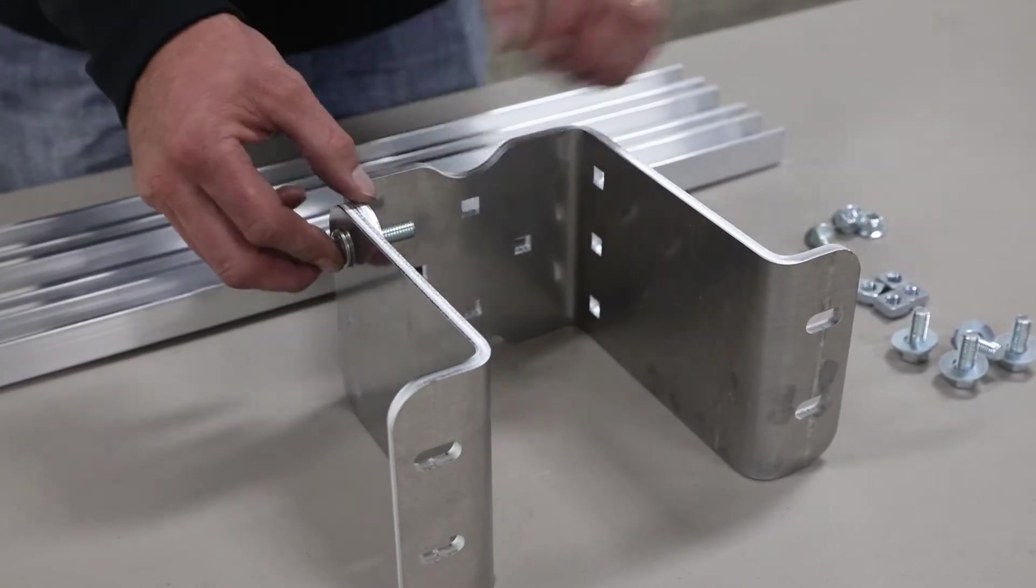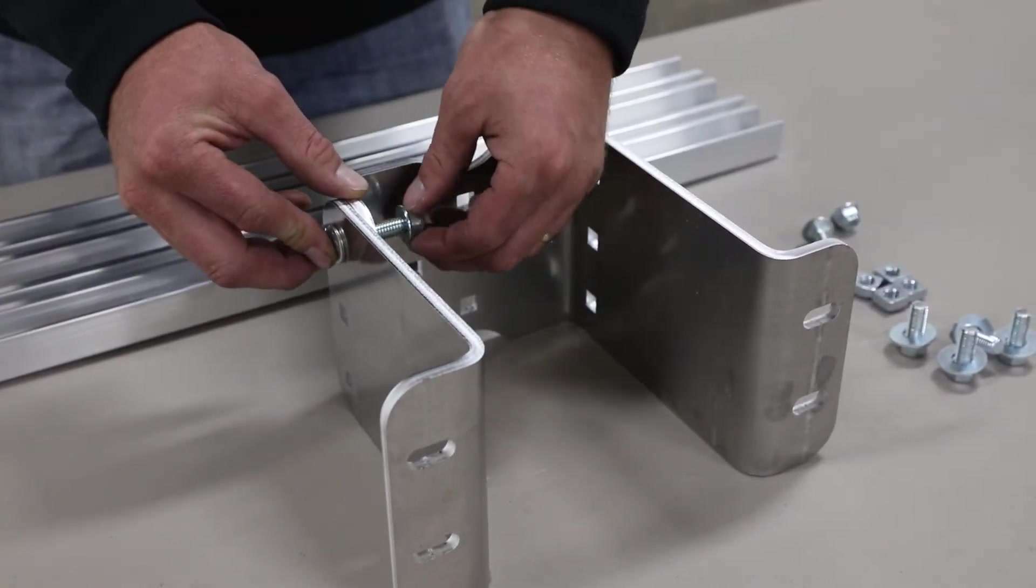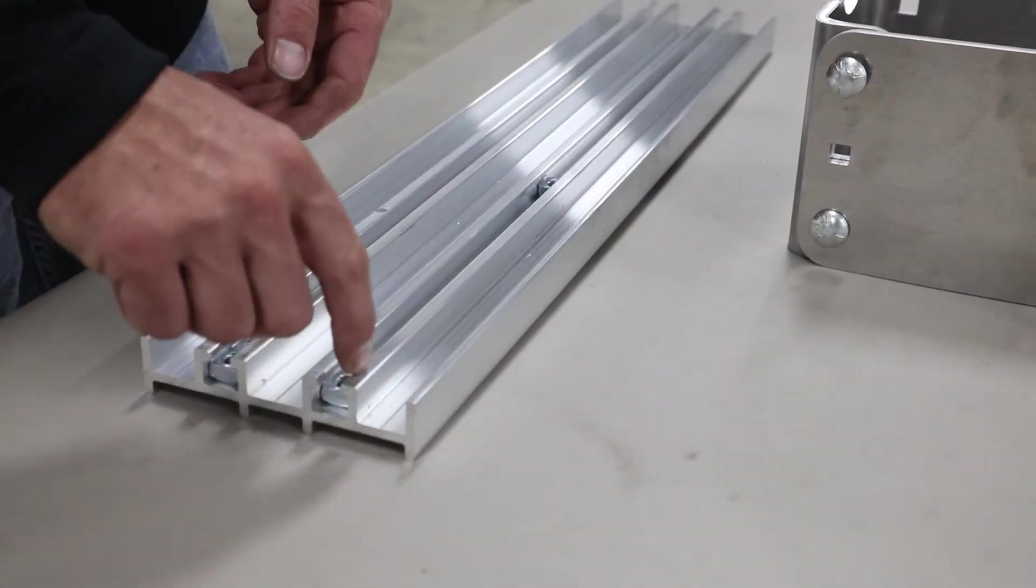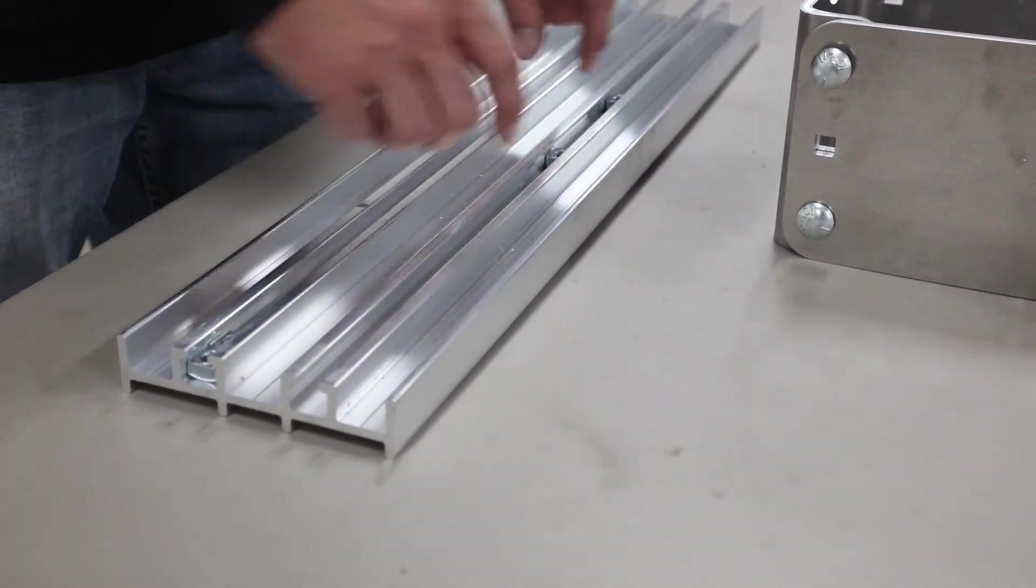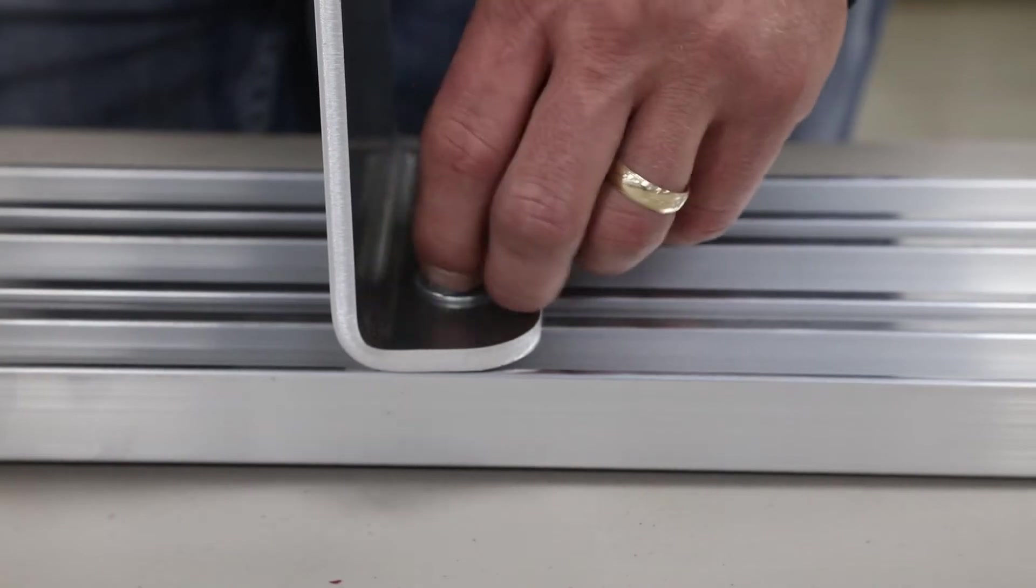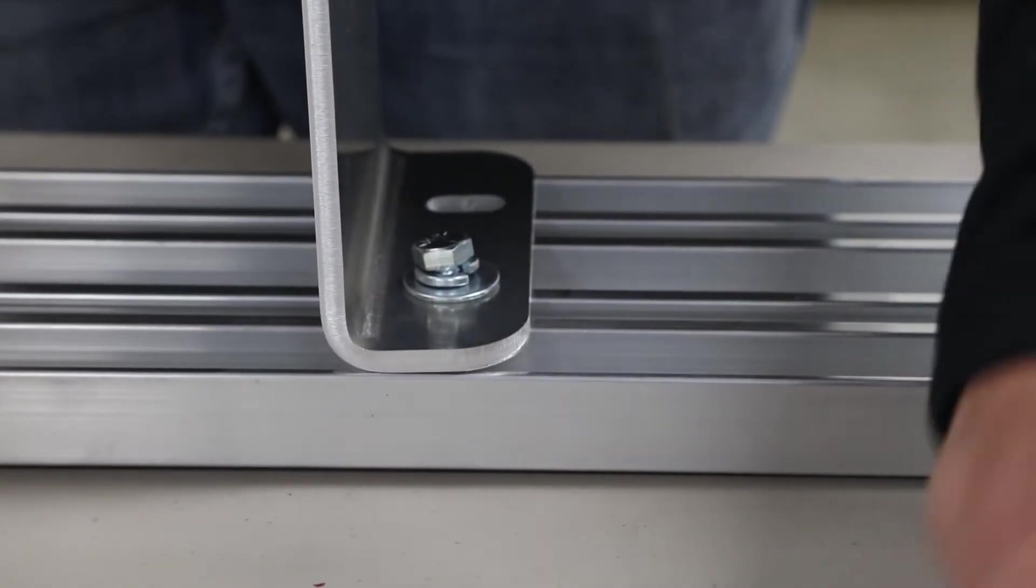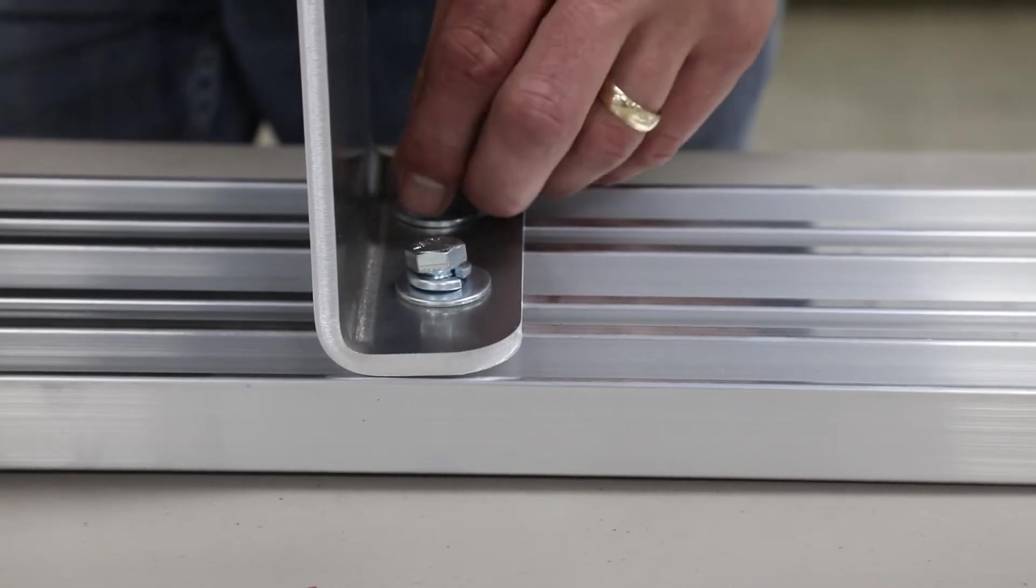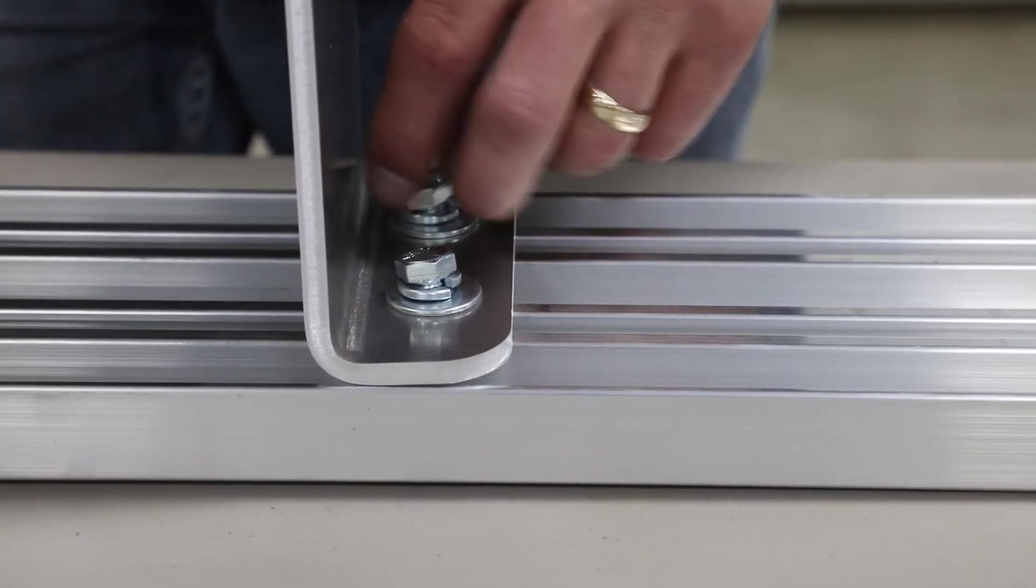Secure both halves of pivot mount with carriage bolts and nuts. Slide square nuts into channels in mounting plate. Secure pivot mount to mounting plate by threading bolts with flat washers and lock washers into square nuts in channel. Center pivot mount on mounting plate and finger tighten all hardware.